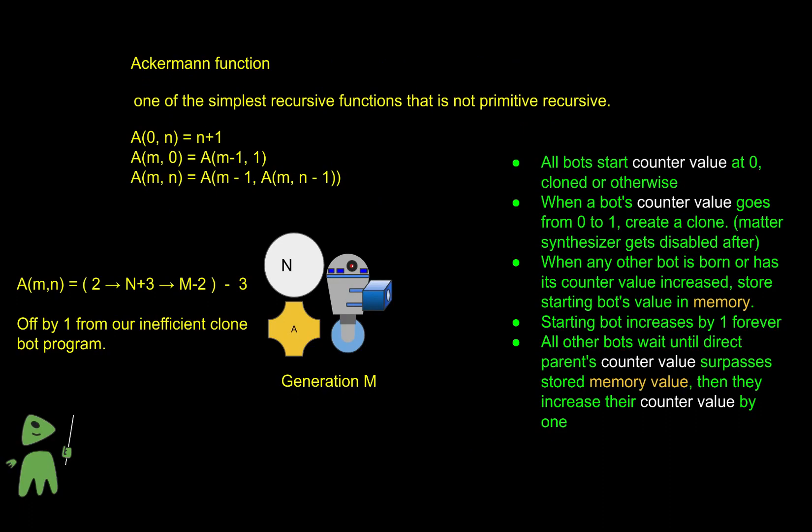The fact that it's not primitive recursive means we cannot unwind it into a single set of instructions with bounded loops. If we look at its table of values, it is only off by one from what our robots produce. Although it is way quicker to write in these three equations or lines of code, hopefully this clone bot program can give a better understanding or intuitive sense of just how these numbers grow so astronomically.